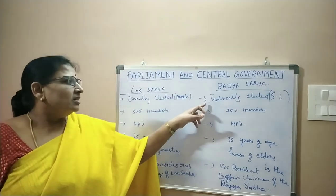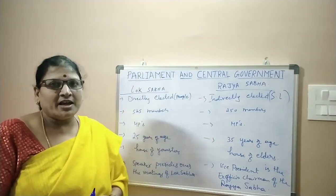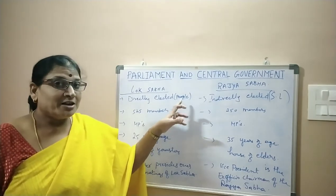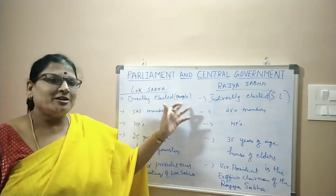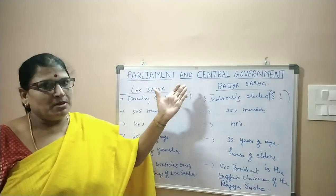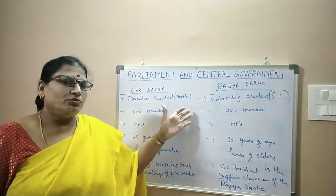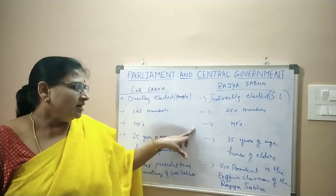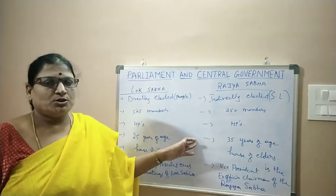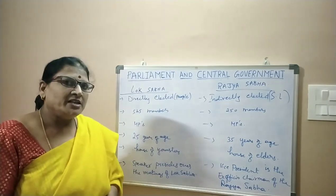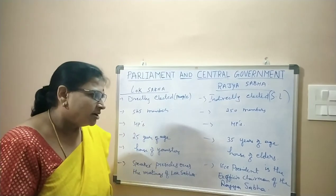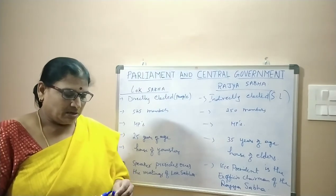The members of Rajya Sabha are indirectly elected — they are elected by the state legislatures. They are indirectly elected by the people because the state legislatures are directly elected by the people, and the state legislatures then elect the members of Rajya Sabha. Rajya Sabha has 250 members, and they are also called members of the parliament. The people who have attained the age of 35 can contest for election to Rajya Sabha — that is why it is called the house of elders. The vice president presides over the meetings of Rajya Sabha and is called the ex-officio chairman of Rajya Sabha.